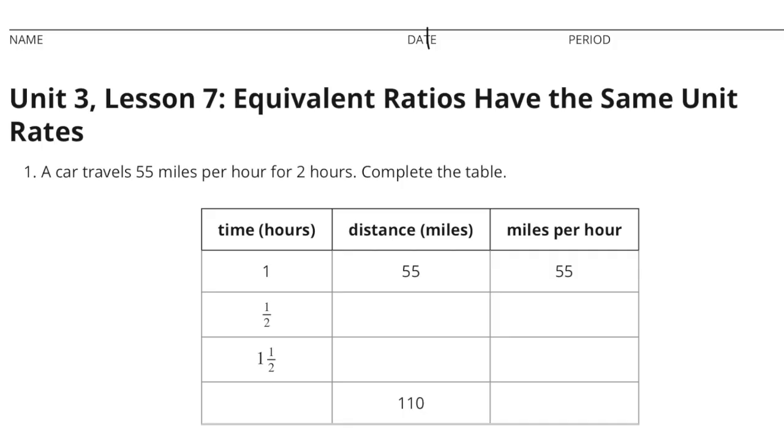Unit 3 Lesson 7: Equivalent Ratios Have the Same Unit Rates. Problem 1: A car travels 55 miles per hour for 2 hours. Complete the table. The right-hand column, every row will be 55, representing 55 miles per hour.